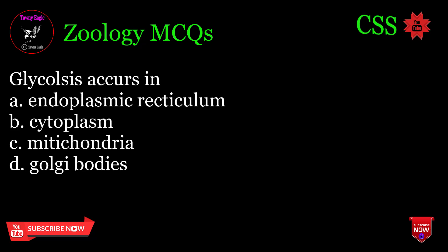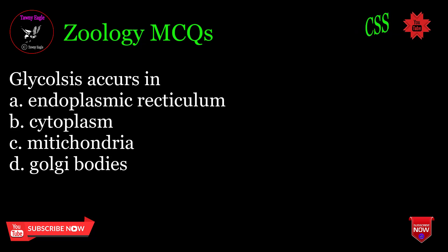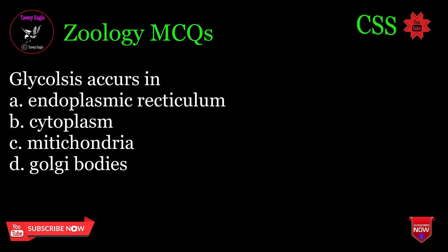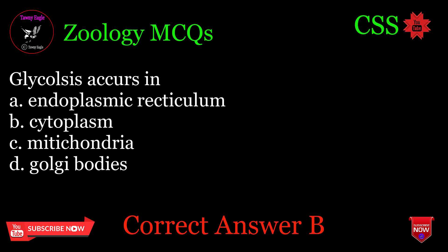Glycolysis occurs in: A. Endoplasmic reticulum, B. Cytoplasm, C. Mitochondria, D. Golgi bodies. Correct answer: B.